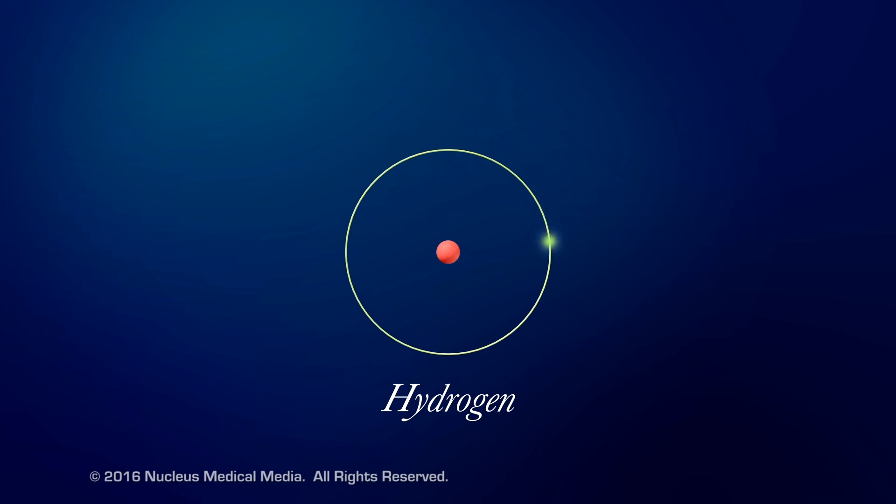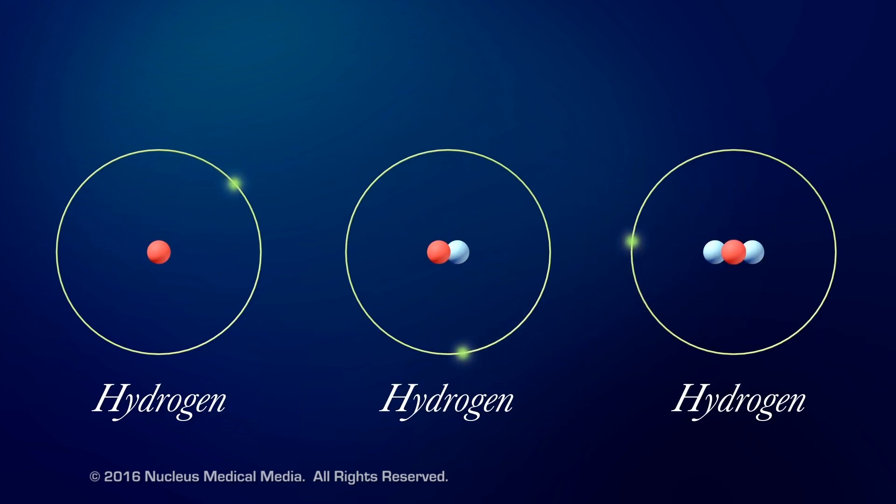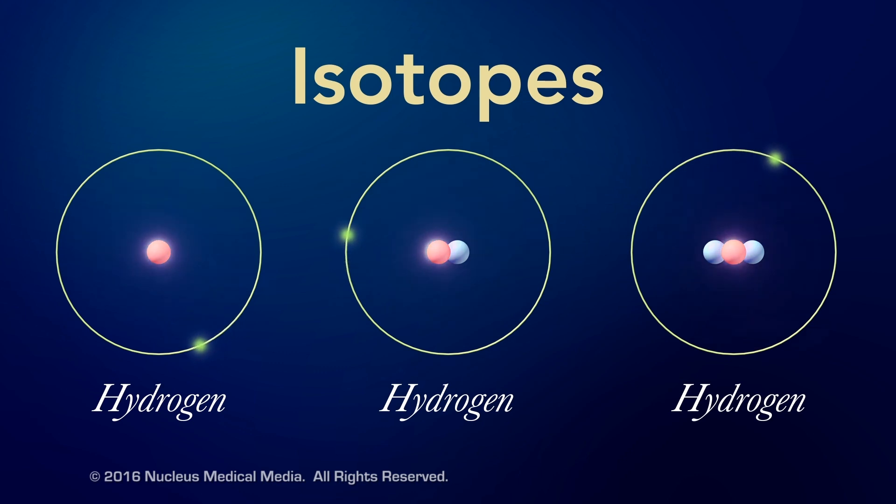Even though every atom of the same element always has the same number of protons, sometimes an element has atoms with different numbers of neutrons. Ordinary hydrogen has no neutrons, but there's a version of hydrogen with one neutron, and another version with two neutrons. Atoms of the same element with different numbers of neutrons are called isotopes. The three isotopes you see here are all still hydrogen because they all have only one proton.